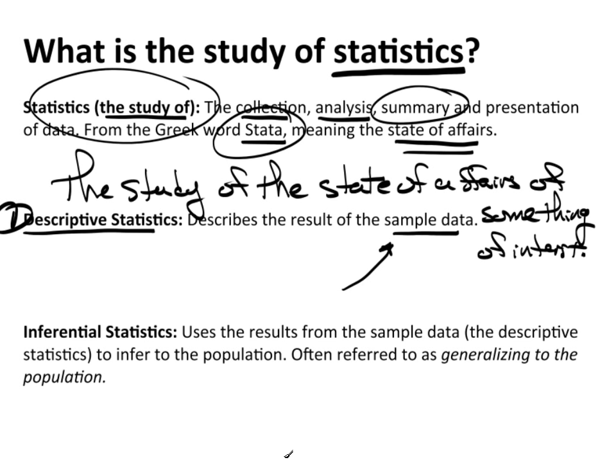Now, the other form is inferential statistics. It's really the inferential statistics that we rely on much more heavily. And what inferential statistics does is it uses the results from the sample data. So in other words, it takes this descriptive statistic, whatever that value is, and it's used to infer, hence the term inferential statistics. It's used to infer something about the population. So I want to go back and talk about what's really happening in the population, but I'm going to use the sample to do it.